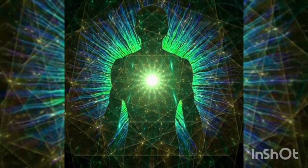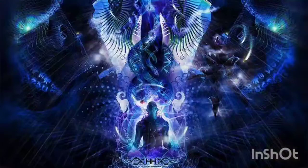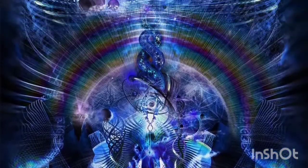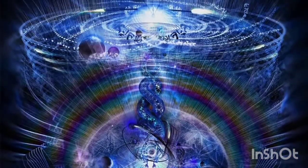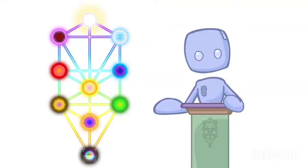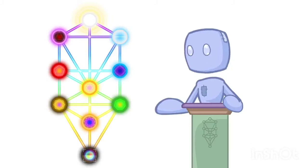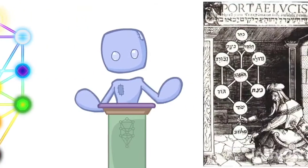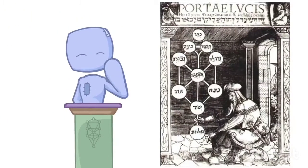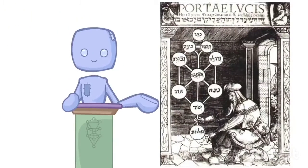It describes the soul of humanity, providing a blueprint for us to follow in order to reconnect with the divine. This symbol is the principle diagram for use with Kabbalah. However, Kabbalah in its nature is more of a concept than an image.